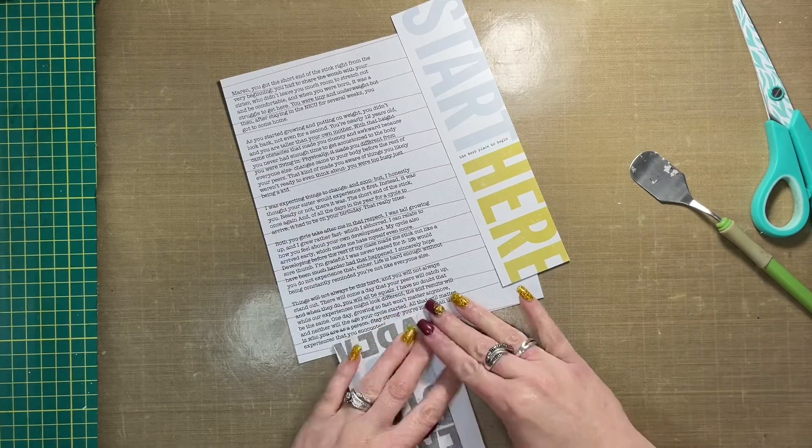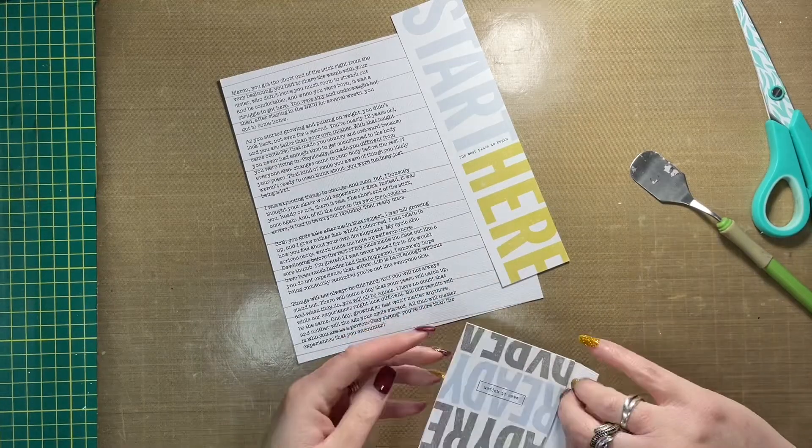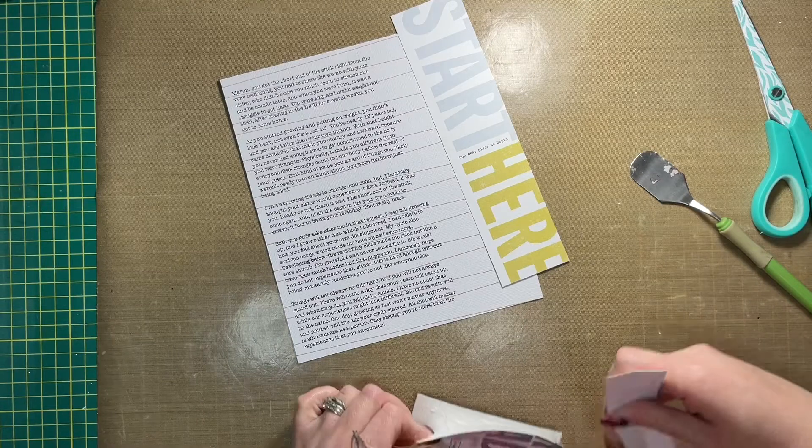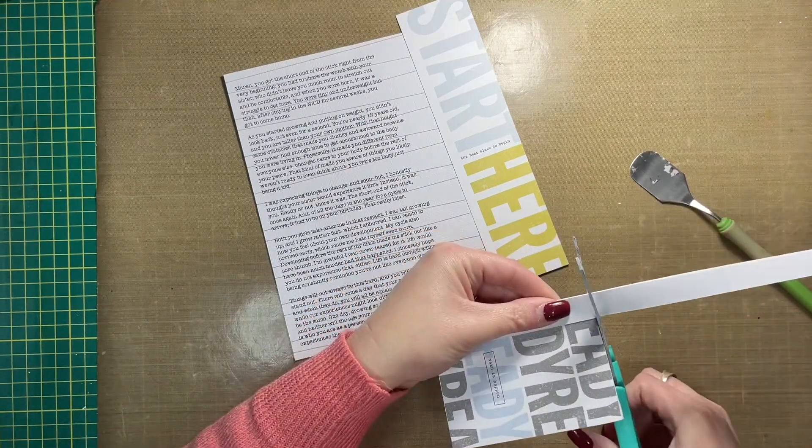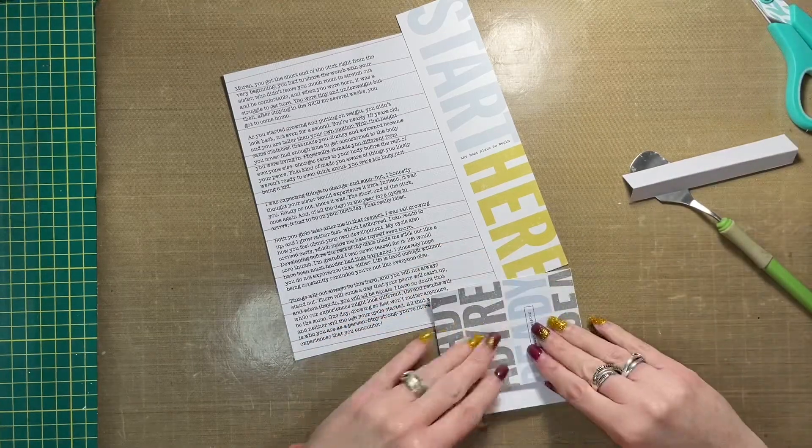And so I took it apart and then ended up gluing them together in the process and then realized they needed to come apart again so that I could make my hinge. It was just a hot mess, but anyways I got it separated enough using my little spatula for my Cricut.